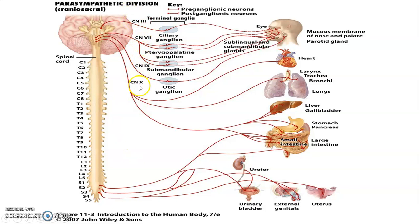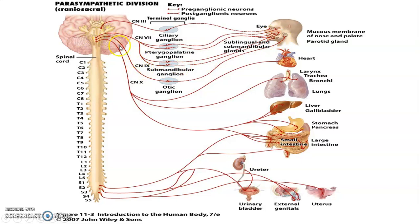From the third cranial nerve, fibers carry from the Edinger-Westphal nucleus through the oculomotor nerve to the ciliary ganglion, synapsing with postganglionic fibers that cause constriction of the sphincter pupillae and the ciliary muscles to aid in accommodation. The seventh cranial nerve, from the superior salivatory and lacrimal nucleus, goes to the pterygopalatine ganglion and submandibular ganglion, innervating the lacrimal glands, nasal mucosa, and sublingual and submandibular glands. The ninth cranial nerve, through the tympanic branch of glossopharyngeal, gets to the otic ganglion through the lesser petrosal nerve, with postganglionic fibers hitchhiking on the auriculotemporal nerve to reach the parotid gland.